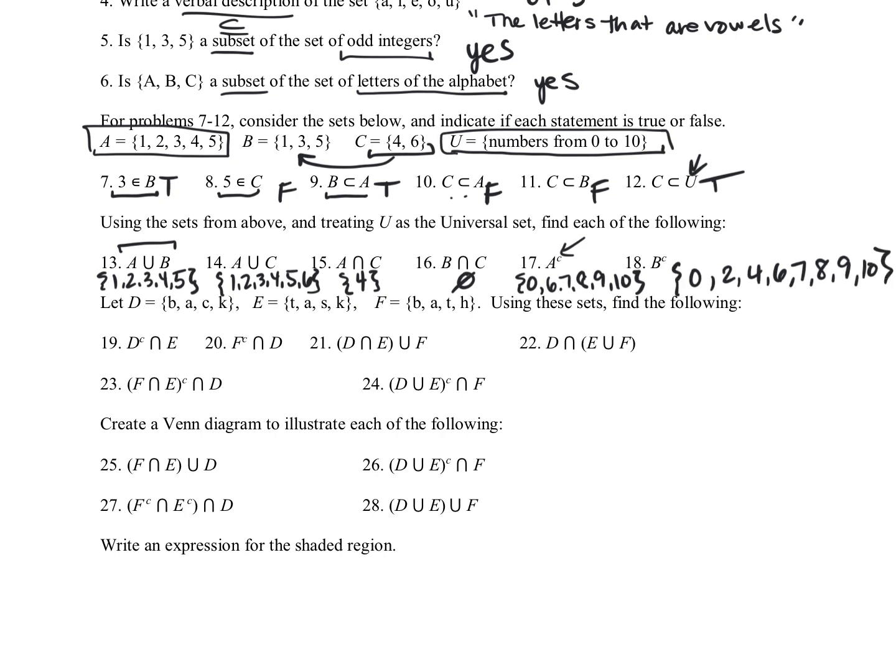For number nineteen, we have the complement of D. So we're looking at a new set now. We have D, E, and F. This one didn't give us the universe. You could make an assumption that it was all the letters in the alphabet, but that seems like a bit much. So I'm going to define my universe right here and just use all the letters that I see in D, E, and F.